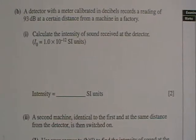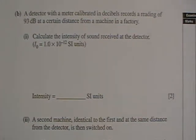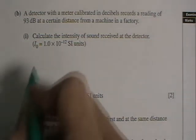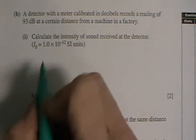Part B. A detector with a meter calibrated in decibels records a reading of 93 decibels at a certain distance from a machine in a factory. Calculate the intensity of sound received at the detector.